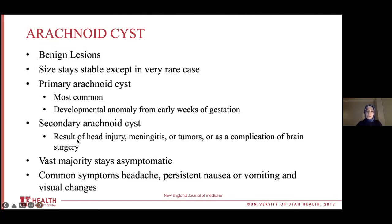The vast majority of arachnoid cysts stay asymptomatic, and very rarely they can cause headache, persistent nausea, vomiting, or visual changes. This mostly happens if the arachnoid cyst is causing pressure to the brain tissue — it can happen, but it's very rare. That's how we decide if it is causing someone's headache: by looking at brain images and seeing if it's causing any pressure or injury to the brain tissue itself.